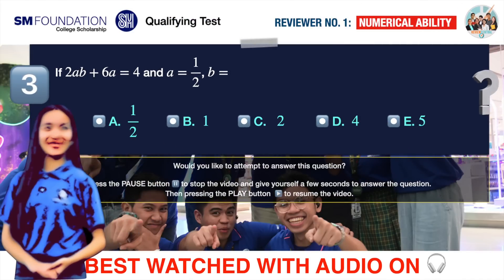Question number three. If 2AB plus 6A equals 48 and A equals 1 half, B equals A. 1 half, B. 1, C. 2, D. 4, E. 5.